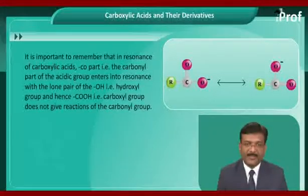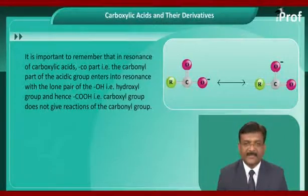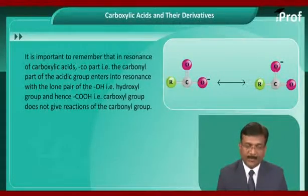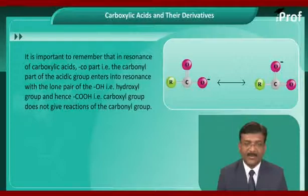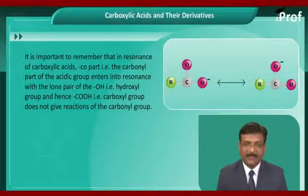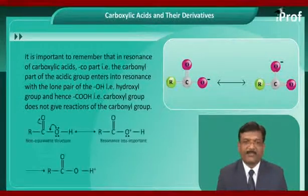It is important to remember that in the resonance of carboxylic acids, the C=O part — that is, the carbonyl part of the acidic group — enters into resonance with the lone pair of the OH, that is the hydroxyl group. Hence, the COOH, that is the carboxyl group, does not give reactions of the carbonyl group.